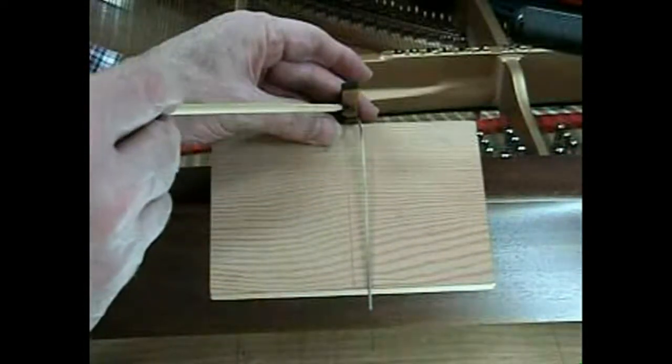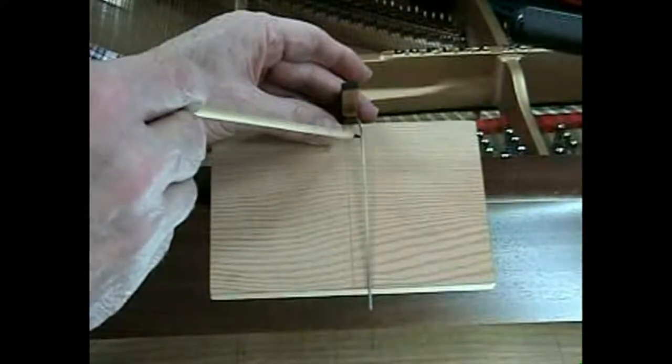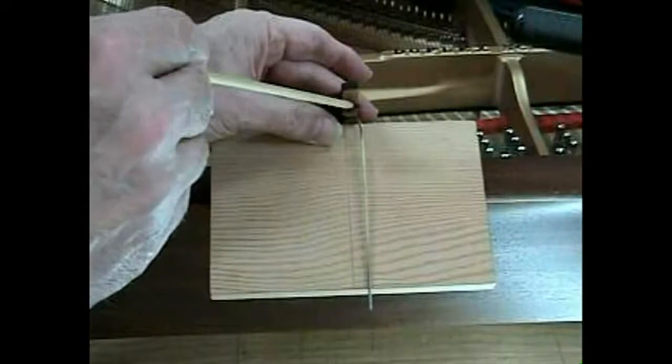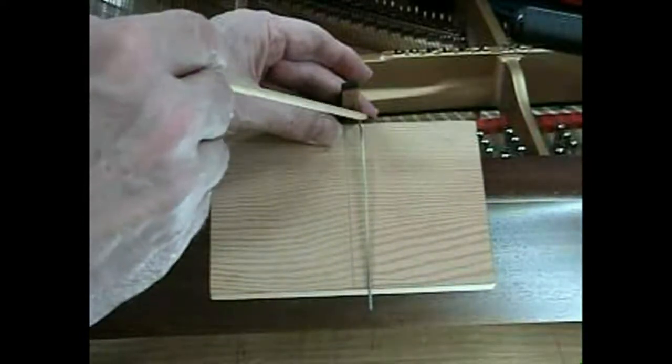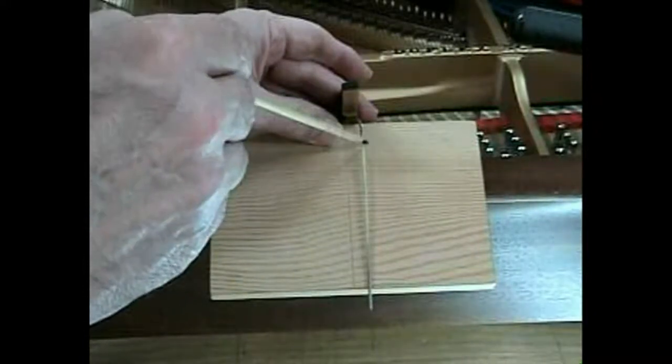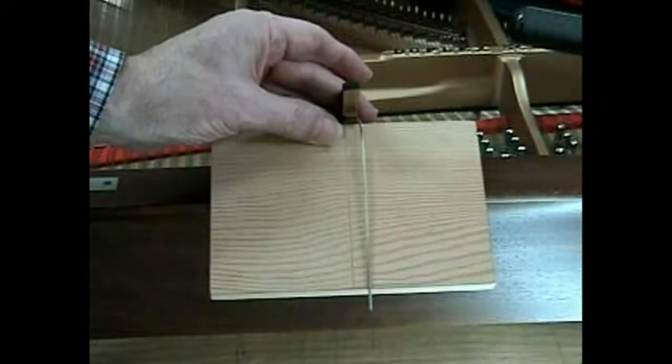This represents, obviously, the strings. And right about here would be our damper guide bushing. And this is the kind of relationship we want. The square bottom of the damper head and a perpendicular condition at the bushing.